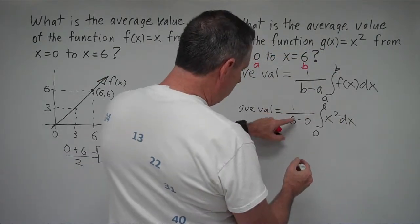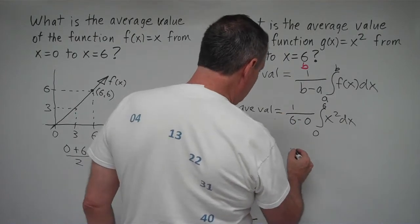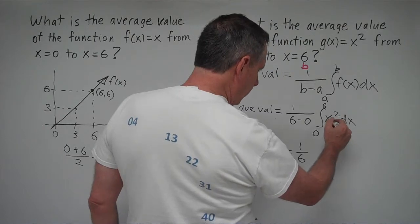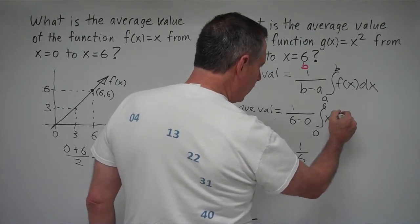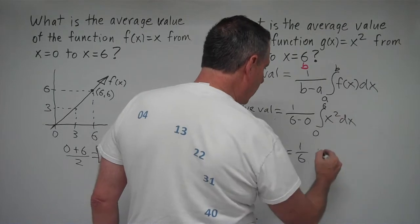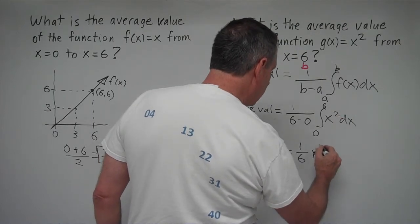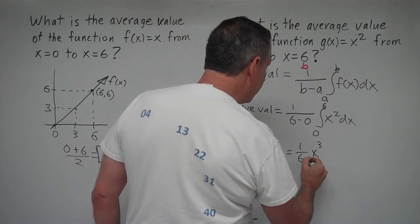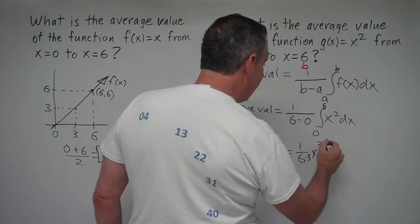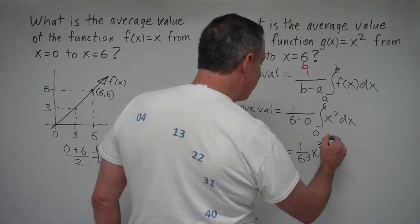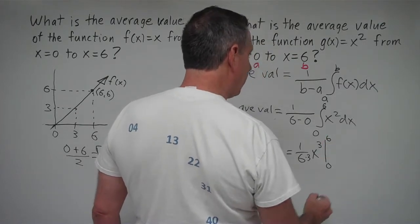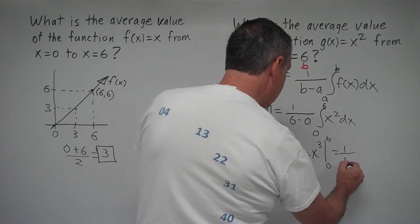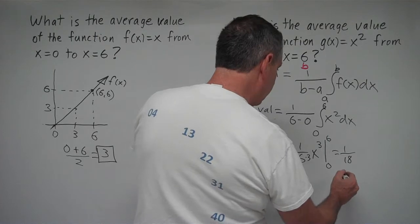And this 1 over 6 minus 0 is going to be 1 sixth. So we're going to be equal to 1 sixth. And the integral of x squared, we have to raise this 2 power by 1. So we're going to get x cubed. And we divide by the power to which we raise. We're going to be dividing by 3. And we're going to be evaluating from x equals 0 to x equals 6. And simplifying, we're going to get 1 eighteenth. 6 times 3 is 18.